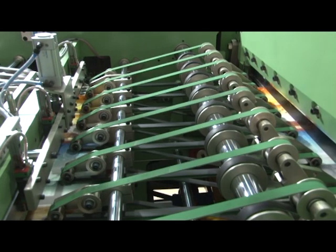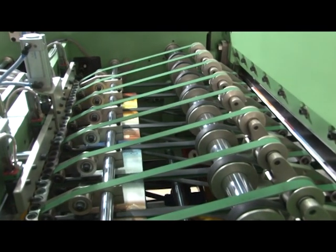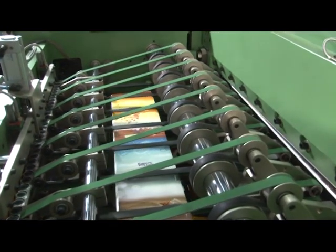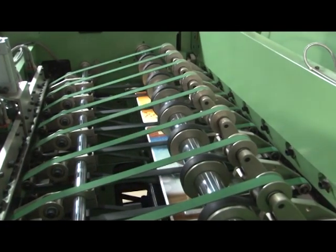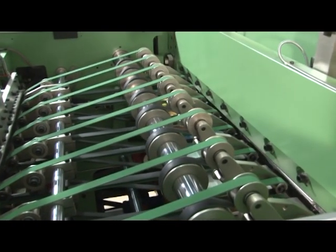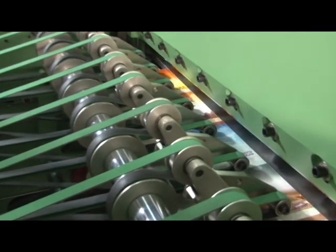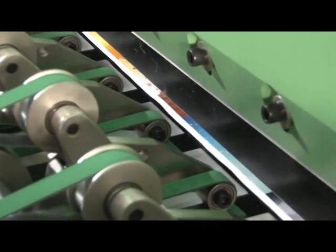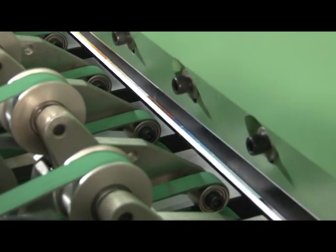On completion of the process of bunch squaring, the book bunch moves further for finishing and partition of the book which is the last process of the machine. For the finishing process, the book bunch first enters to the front cutting unit.